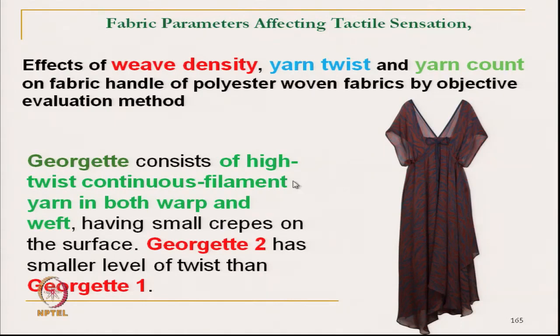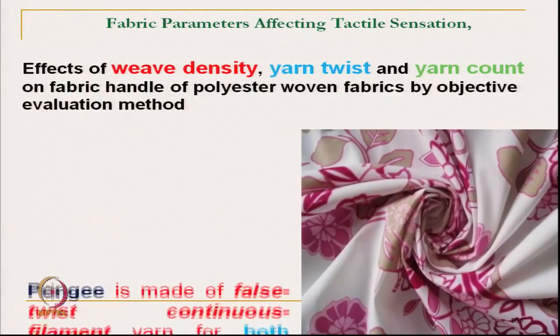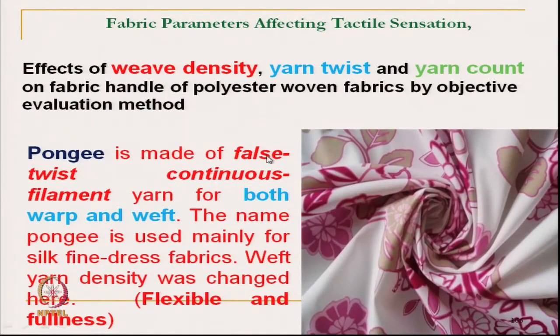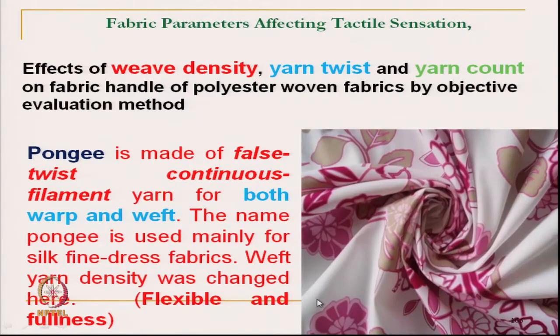Georgette is a fabric where both warp and weft yarns are highly twisted. Pongi is made of false-twist textured yarn, which gives bulk. Continuous polyester filament is false-twisted and used for both warp and weft. Although the name pongi is traditionally used for fine silk fabric, here it is used for polyester textured fabric to give fullness and flexibility. Weft density was varied; pongi fabric gives fullness and softness.